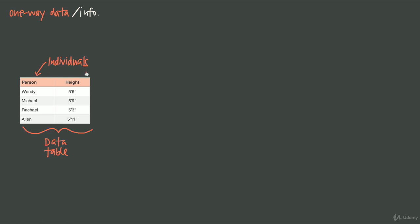And then the height — we've recorded the height for each one of them. The height is what we call a variable. A variable is just a property of each individual. We always have variables recorded for individuals. Notice here that we have one variable for each individual, but we could have more than one variable.